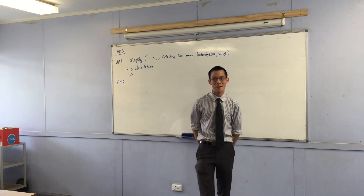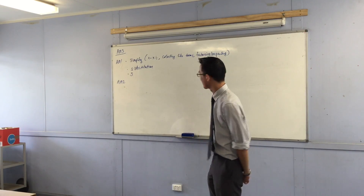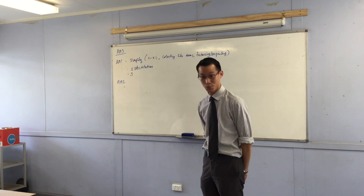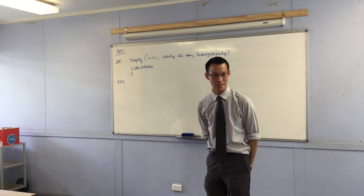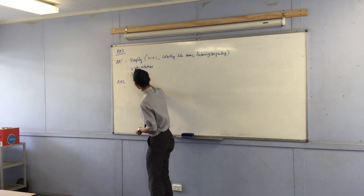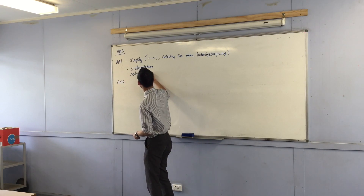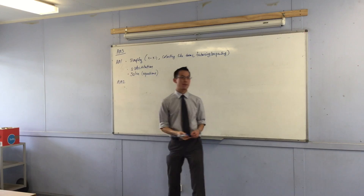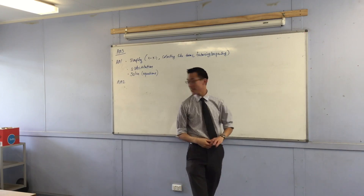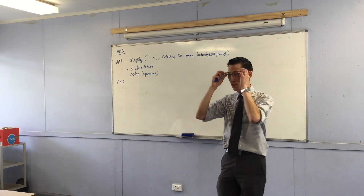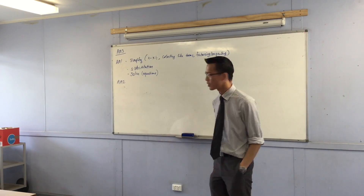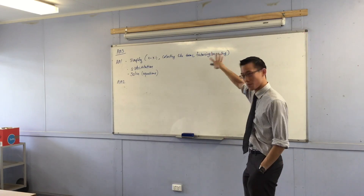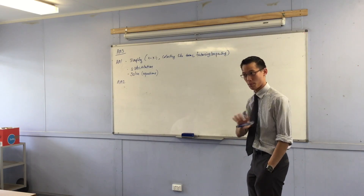There's one more skill we looked at in AM1. If you get given an equation, you have to do something to it — solve it. So we would hand you an equation, there'd be a pronumeral in it, and we'd say: can you find out what the pronumeral is? What's the solution? That was AM1, and there are some links from that into AM3 which I'm going to point out in a second.